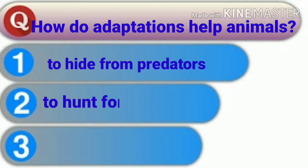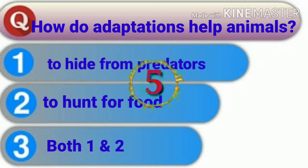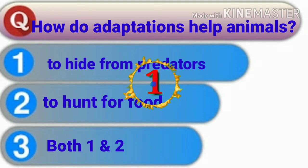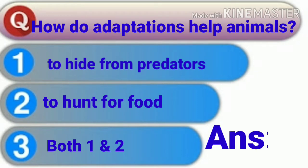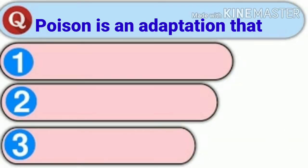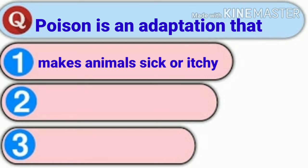Why do adaptations help animals? Number one: to hide from predators. Number two: to hunt for food. Number three: both one and two. You have five seconds to try yourself. The answer is third — both one and two.